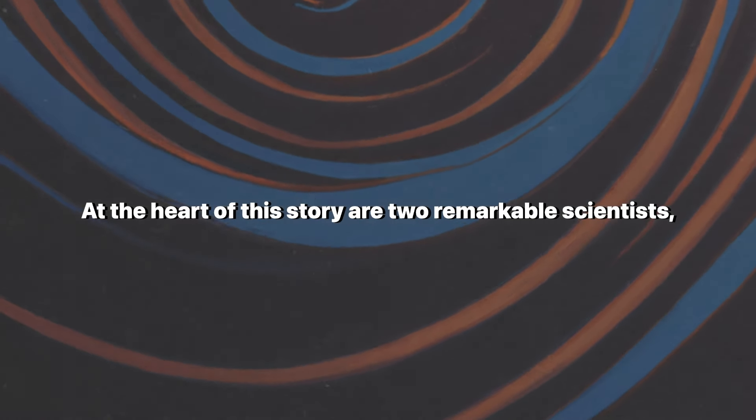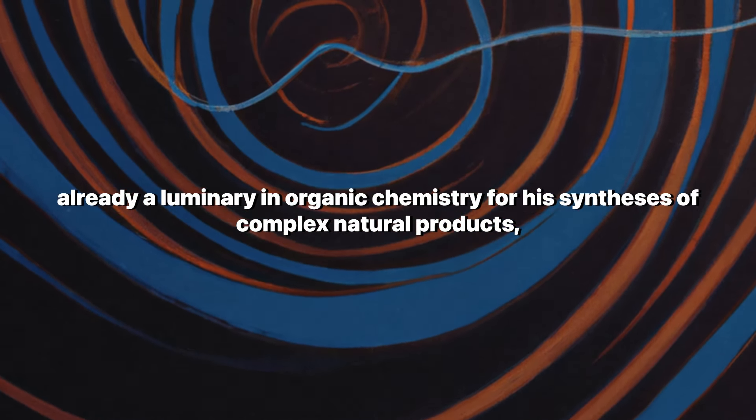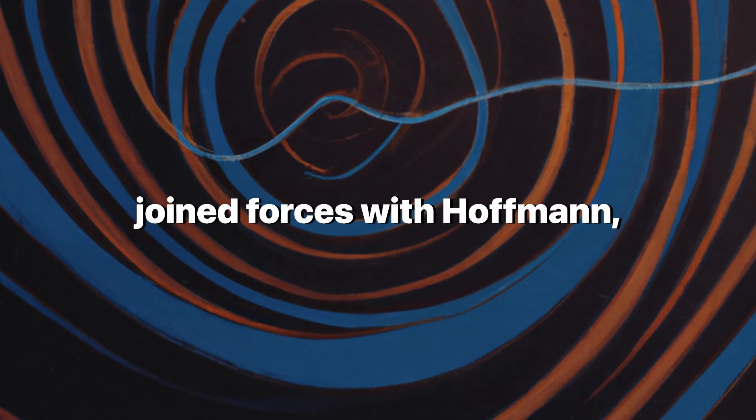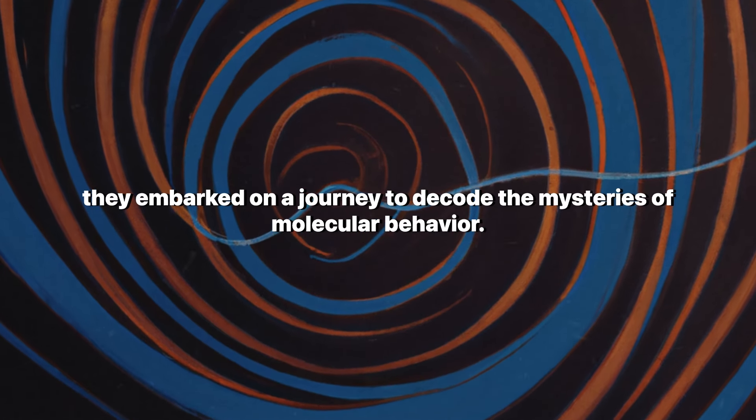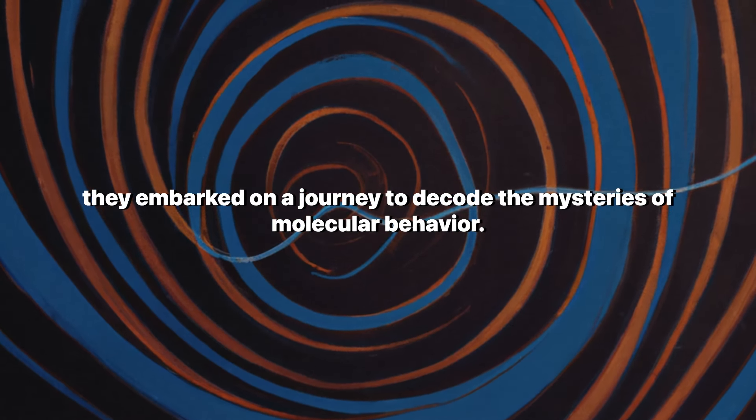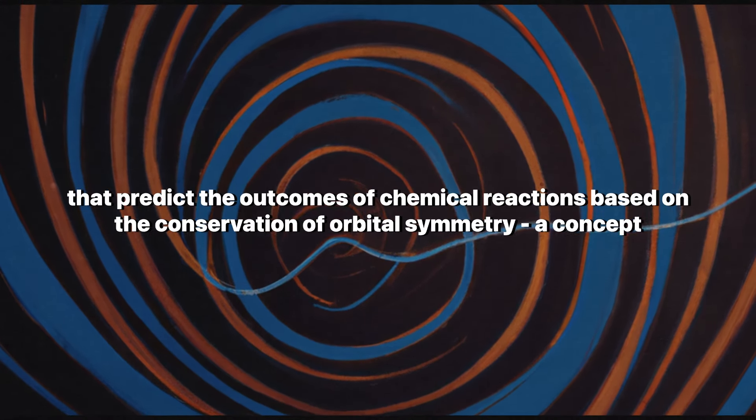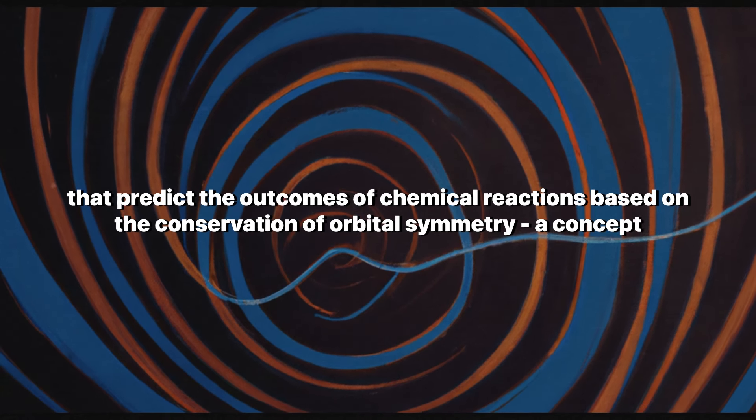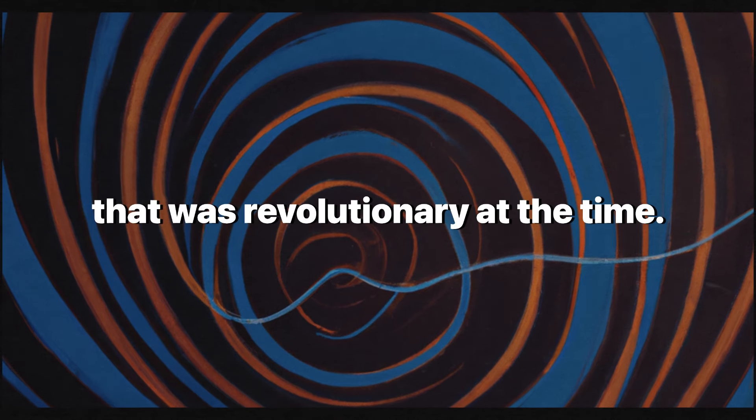At the heart of this story are two remarkable scientists, Robert Burns Woodward and Roald Hoffman. Woodward, already a luminary in organic chemistry for his syntheses of complex natural products, joined forces with Hoffman, a theoretical chemist. Together, they embarked on a journey to decode the mysteries of molecular behavior. Their collaboration would lead to the formulation of rules that predict the outcomes of chemical reactions based on the conservation of orbital symmetry, a concept that was revolutionary at the time.